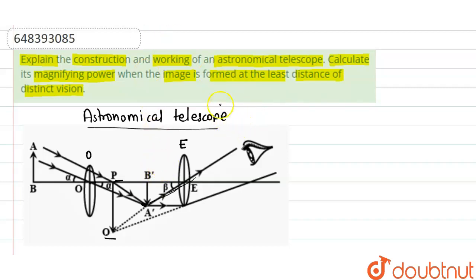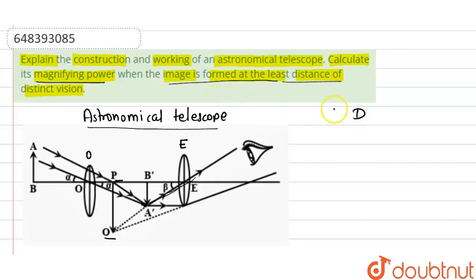For the second part, we derive the formula for magnifying power when the image formed by the eyepiece is at the least distance of distinct vision, denoted by D. The formula for magnifying power is M = −fo / ue, where fo is the focal length of the objective lens and ue is the object distance for the eyepiece lens. In this telescope, the image formed by the objective lens is at the focus of the eyepiece lens.